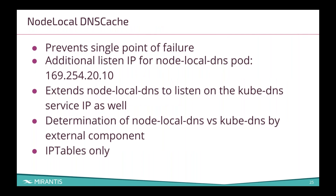Node local DNS cache. We were dealing with a sort of single point of failure. Now it's set up so that if node local DNS doesn't provide the appropriate response, it will also listen on the Kube DNS service IP. There's an external component that makes the determination of which one to listen to. This only works with iptables — it does not work with IPVS yet.